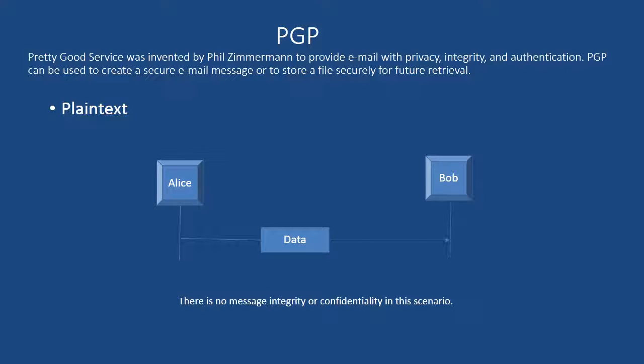This is a very simple scenario. Alice is preparing her message and sending it to Bob, and there is no message integrity or confidentiality in this scenario.